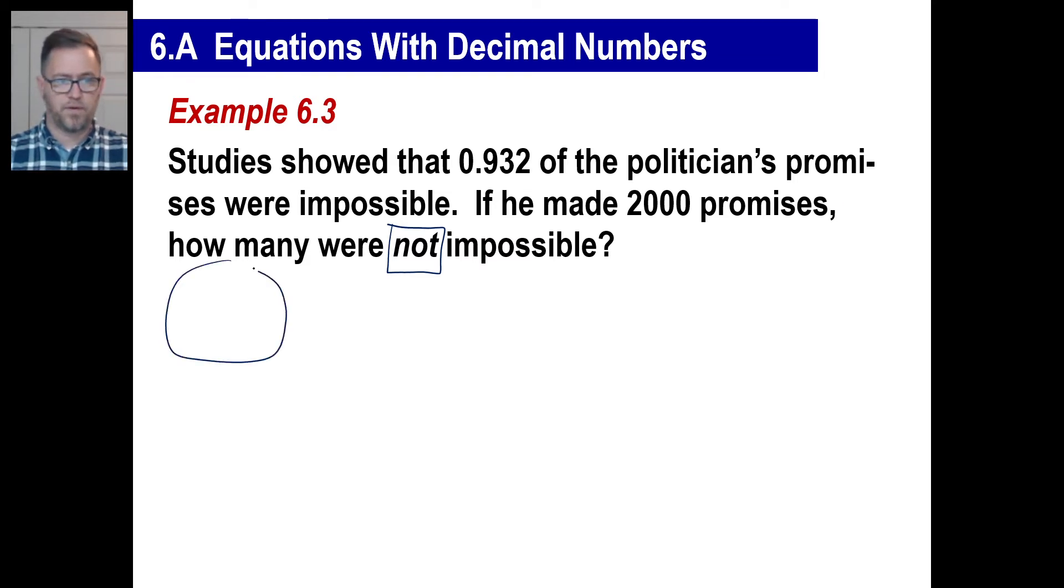So in other words, here's your drawing if you're a visual learner. So 0.932 impossible. He made 2,000 promises total. So how many were not impossible? This is what we're looking for down there. Well, we're trying to figure out, then, what is 0.932 of 2,000?